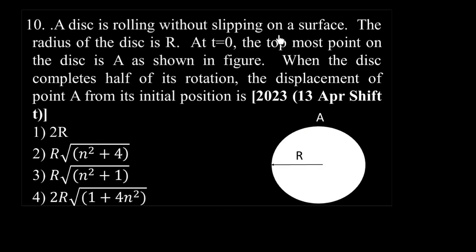A disc is rolling without slipping on a surface. The radius of the disc is R. At t equals 0, the topmost point on the disc is A as shown in the figure. When the disc completes half of its rotation, the displacement of point A from its initial position is...